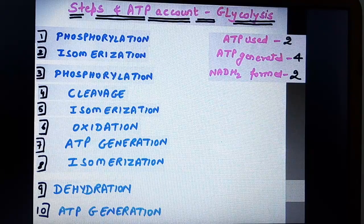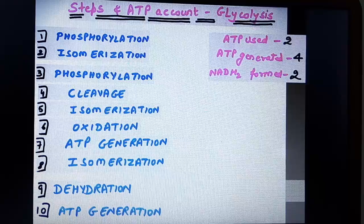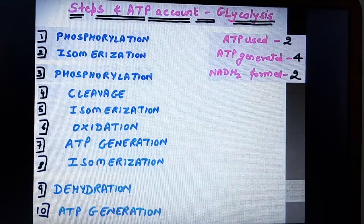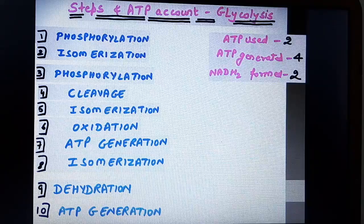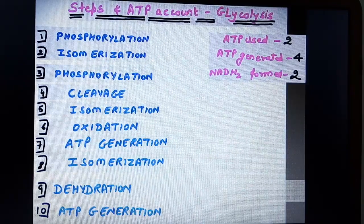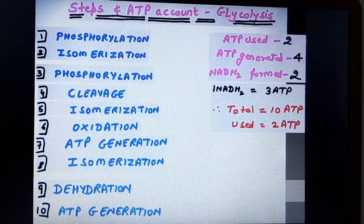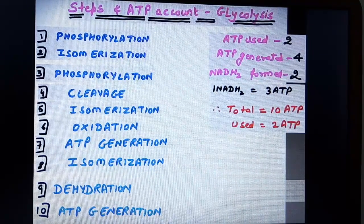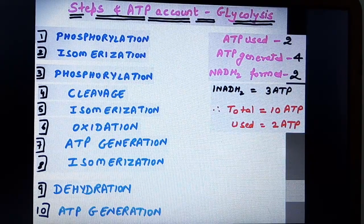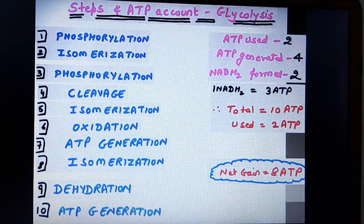When you look in the glycolysis, ATP used is 2 prior to cleavage. ATP generated is 4 after cleavage. NADH2 formed is 2. We need to understand one important thing my dear friend. 1 NADH2 corresponds to 3 ATP. So total ATP is 10 formed. Out of 10, 2 is used up in the preparation. So what finally we are left with is 8 ATP. That is our net gain.